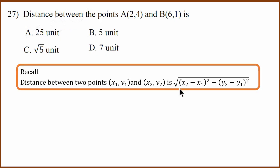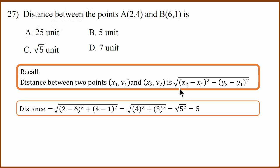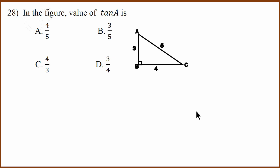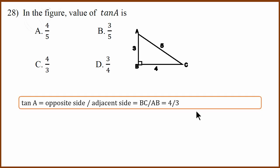Twenty-seventh question: distance formula question. Using x2 minus x1 whole squared plus y2 minus y1 whole squared, substituting gives 2 minus 6 squared is 4 squared, and 4 minus 1 squared is 3 squared. Since 3 squared plus 4 squared equals 5 squared, the square root of 5 squared is 5. Twenty-eighth question: tan A is opposite side by adjacent side. The opposite side to A is BC and the adjacent side is AB, so BC by AB equals 4 by 3.